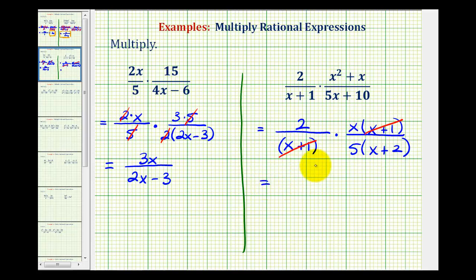Now we can multiply, and our product will be in simplest form. Notice in the numerator we have 2 times x, or 2x, and then the denominator is still 5 times the quantity x plus 2. And there's no reason to multiply this out again. We normally leave our products in factored form.